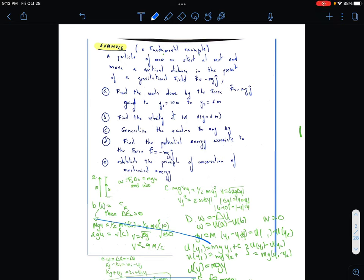Alright, so now we have our fundamental example. It's going to have parts a through e. Find the work done by the force F minus mg*j, going to y1=10 and y2=6. Those are going to be our variables right there, our values we're just going to go ahead and plug them in later on into our equations.